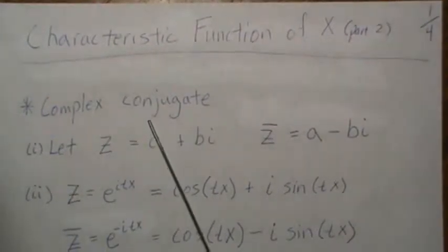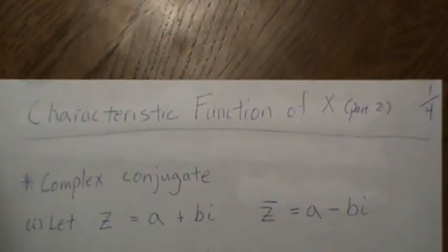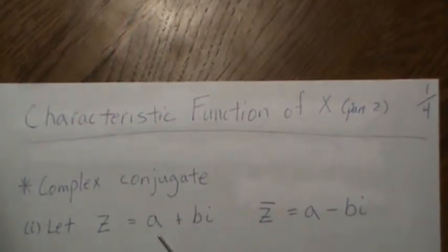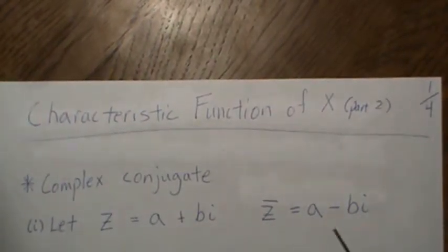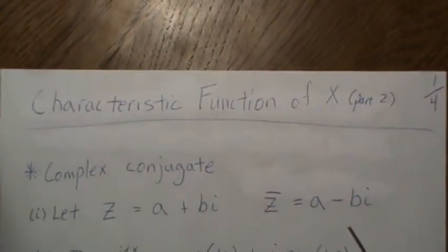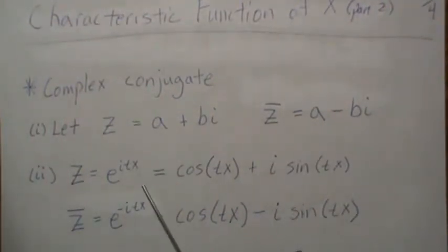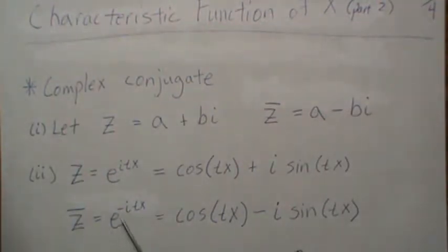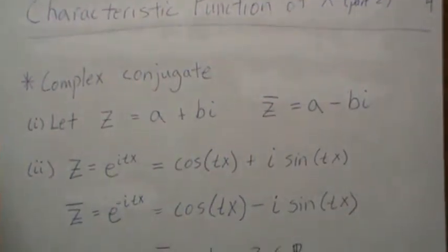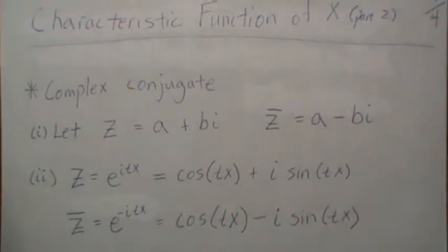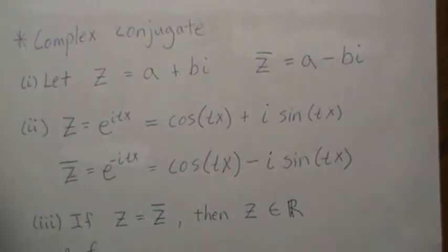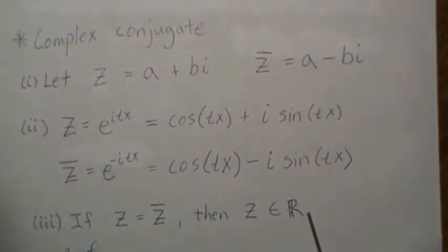First, briefly talk about a complex conjugate. If we have a complex number z = a + bi, its complex conjugate is a - bi, you just put a negative on the imaginary part. Something a little more subtle is if we have a complex number e^(itx), its complex conjugate is e^(-itx). Our first little property: if a complex number equals its complex conjugate, then z has to be part of the real number system, so there's no imaginary component.